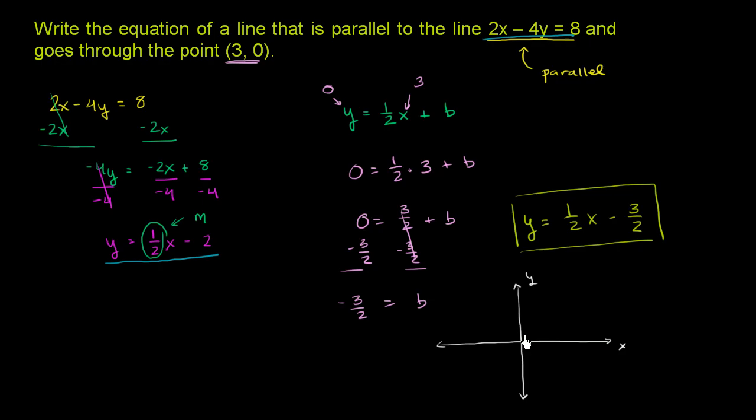It has a y-intercept at negative 2, so negative 2, so 1, 2, at negative 2. And it has a slope of 1 half. So that means for every 1 it goes over, it only goes 1 half up. Or for every 2 it goes over, it only goes 1 up. So it's going to look something like this. I'll try my best to draw it. It's going to look something like that.